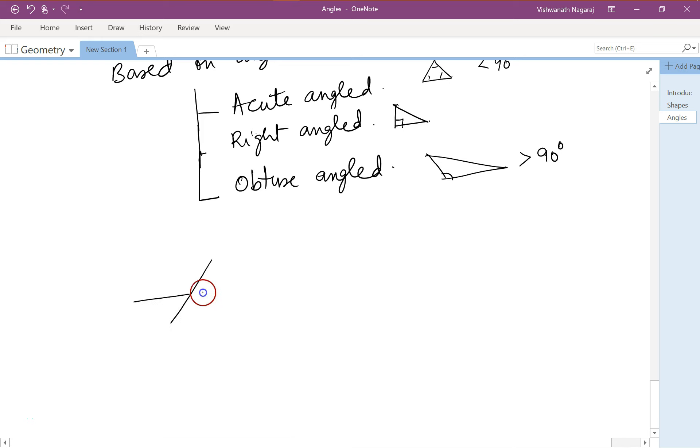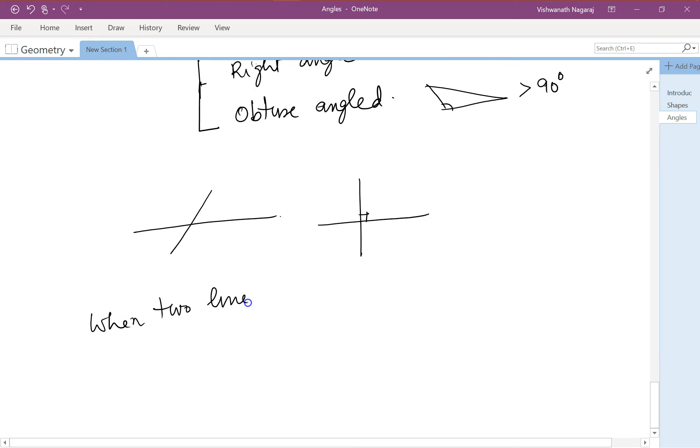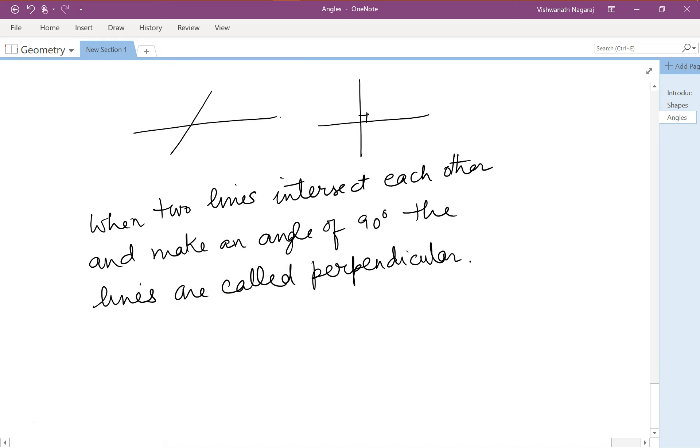Remember intersecting lines: when two lines intersect each other and make an angle of 90 degrees, the lines are called perpendicular. So here, if we name this as L and this as M, then we say L is perpendicular, the symbol for perpendicular is this, L is perpendicular to M. We can also say M is perpendicular to L.